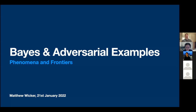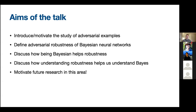Thank you so much for the nice introduction and for wanting to hear this research, something I'm very passionate about. I just defended my PhD on this topic. The talk is aimed at the intersection of Bayesian machine learning and adversarial learning — specifically adversarial examples. I'll first introduce why we should care about adversarial examples, then define adversarial robustness for Bayesian machine learning focusing on neural networks, and split into what being Bayesian can do for robustness and what robustness can bring to Bayes.